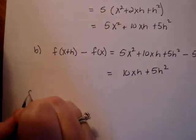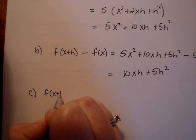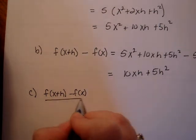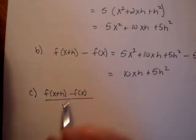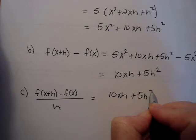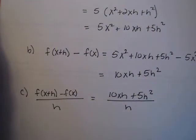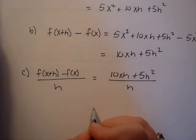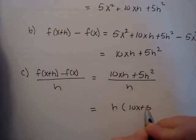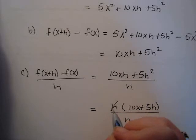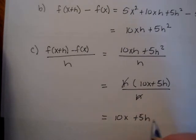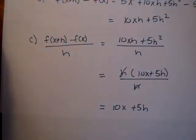Now part C is the last step. Remember the answer from part B was this piece, the top, f of x plus h minus f of x. And now I want to divide that answer by h. So my answer from part B is 10xh plus 5h squared, and I want to divide by h. Don't forget, factor before you cancel, factor before you cancel. Let's factor an h out of the top, and I am left with 10x plus 5h all over h. And now I'm allowed to cancel my h's, and I get 10x plus 5h, and that is the difference quotient for number two.